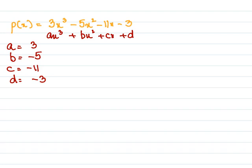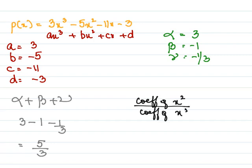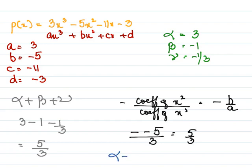The zeros are alpha = 3, beta = -1, and gamma = -1/3. For the first verification: alpha + beta + gamma = 3 + (-1) + (-1/3) = 5/3. On the other side, -b/a = -(-5)/3 = 5/3. Both sides are equal, confirming alpha + beta + gamma = -b/a.